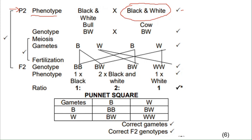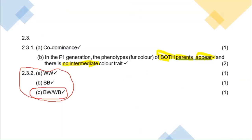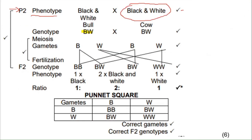You get one mark for the phenotype and one mark for the genotype — that's two out of six easy marks. You also get a mark for mentioning meiosis and fertilization in the correct order. When showing gametes, put a space or comma between them to indicate meiosis occurred. Then cross the gametes: B with B gives BB, B with W gives BW, W with B gives BW, and W with W gives WW.